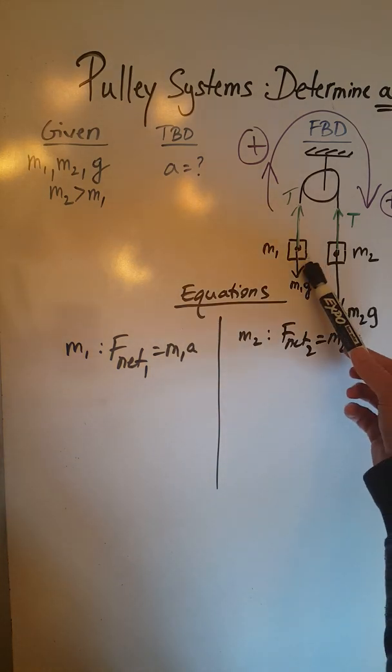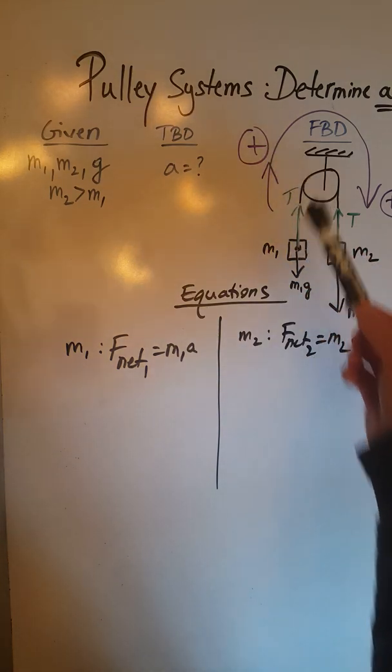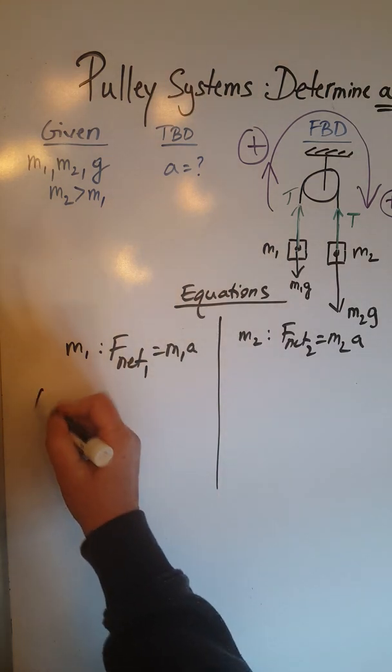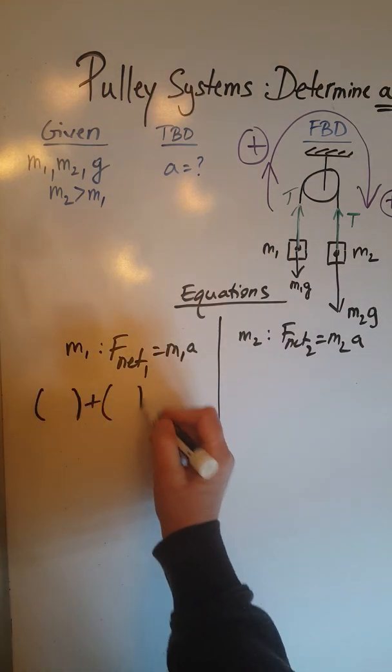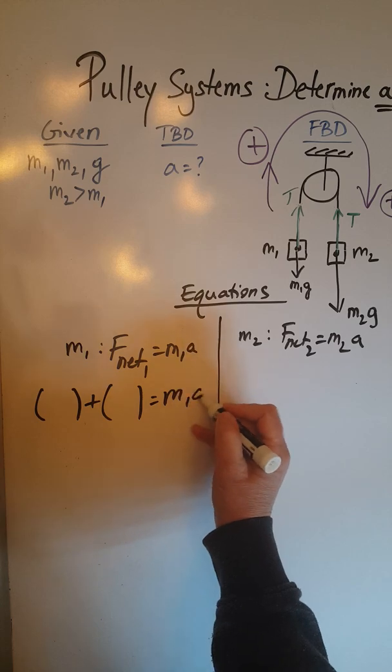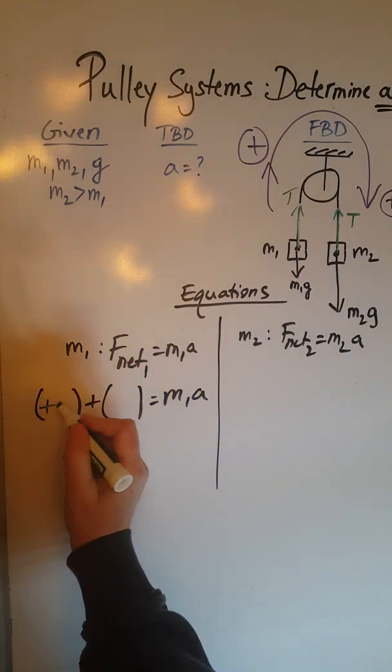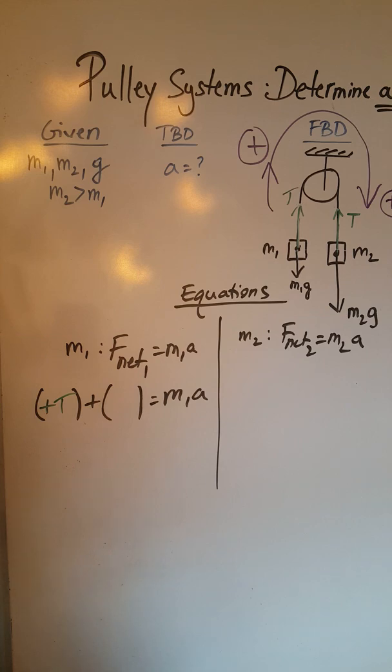On the first object over here we have T being positive and we have M1G being negative, so we have two forces which added together should give me M1A, and those two forces are positive T and negative M1G.